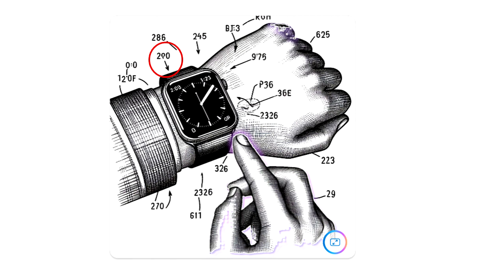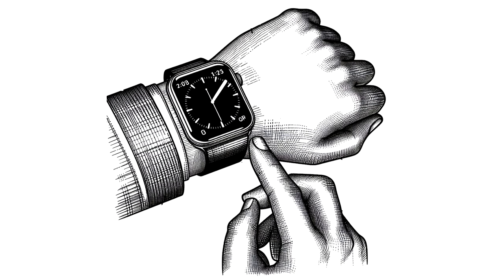I tried asking Copilot not to include reference numbers but it couldn't do it, and I think the reason is that Copilot isn't actually aware of what reference numbers are. It was probably trained on what patent drawings look like and it knows that patent drawings have numbers or symbols and lines pointing to stuff, but it doesn't actually know what reference numbers are.